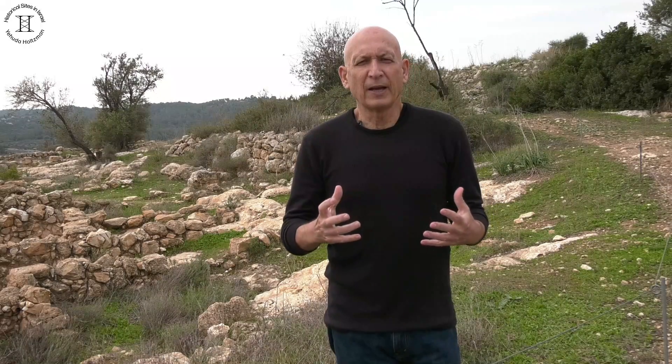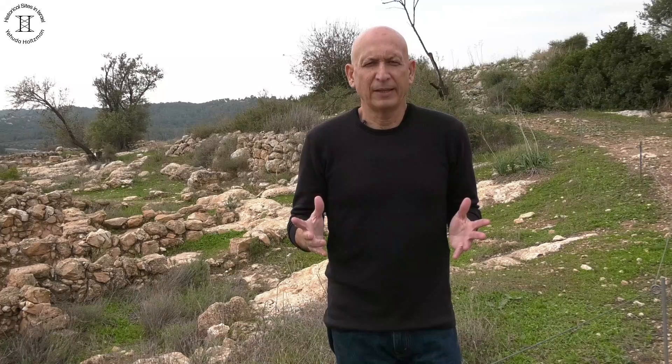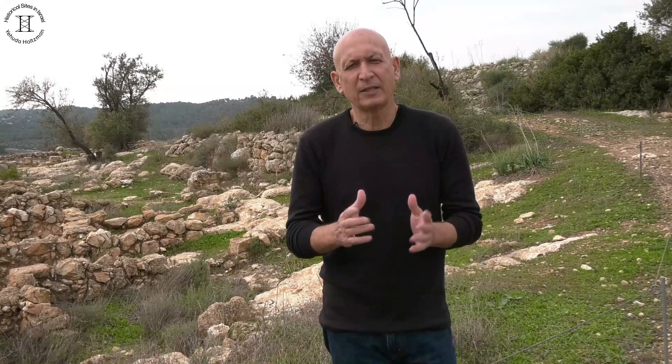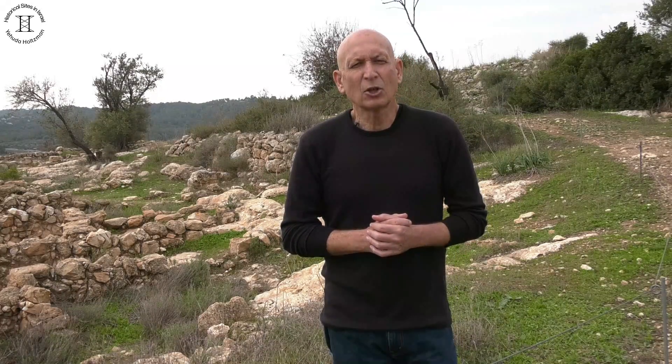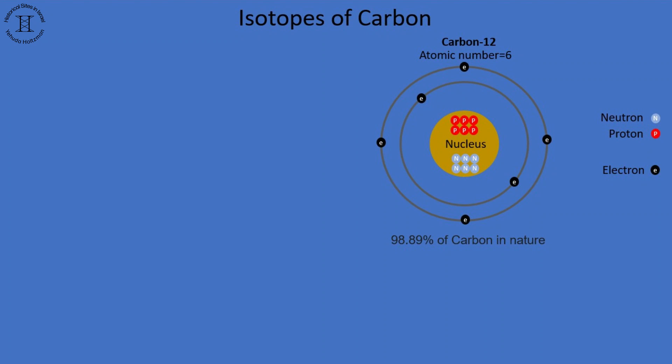Isotopes of a chemical element are atoms that have the same atomic number but have a different mass — that is, the number of neutrons is different. Isotopes of the same element have the same chemical properties.